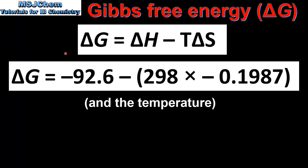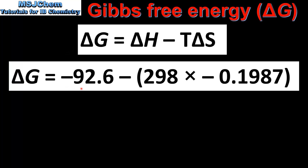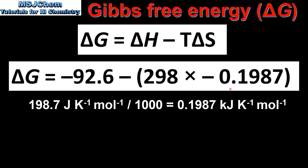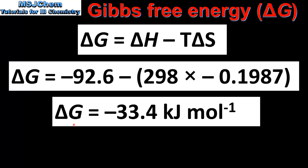The next step is to input the values for the change in enthalpy and the change in entropy into the equation. That's negative 92.6 for the change in enthalpy, the temperature in Kelvin is 298, and we have the change in entropy which has been divided by 1000. We do this to convert from joules per Kelvin mole to kilojoules per Kelvin mole. This gives us a value for the change in Gibbs free energy of negative 33.4 kilojoules per mole.